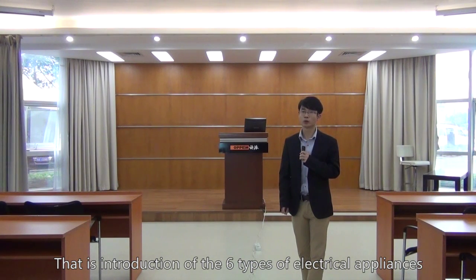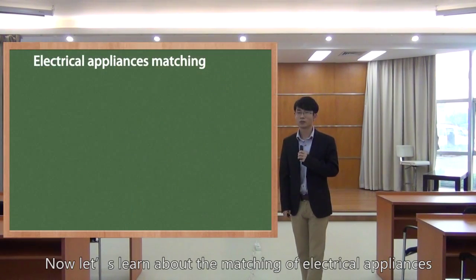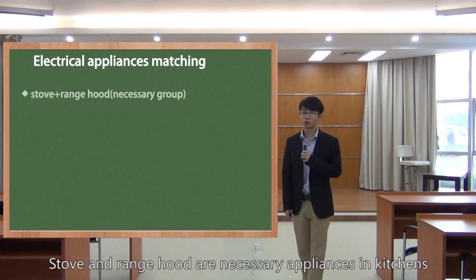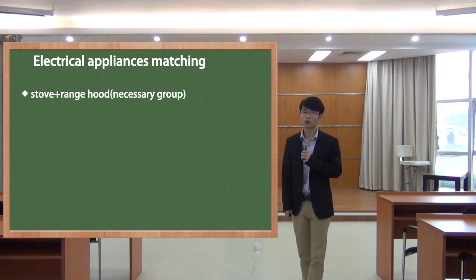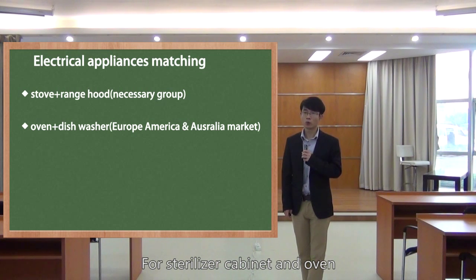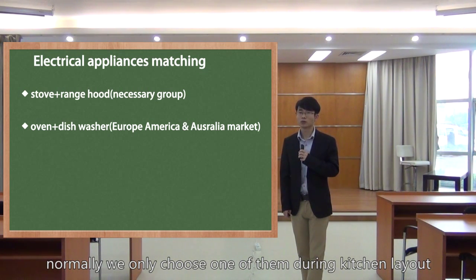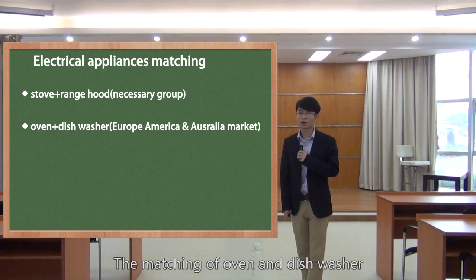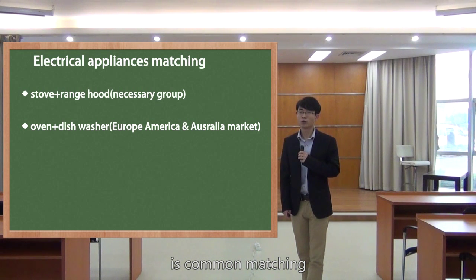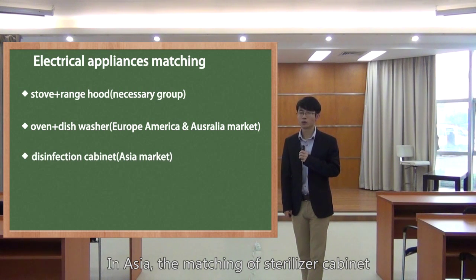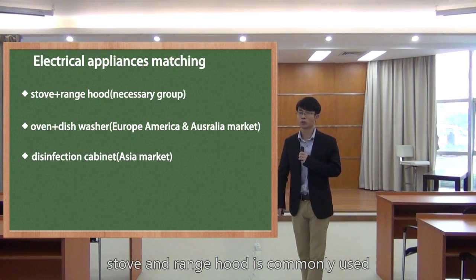That is the introduction of six types of electrical appliances. Next, let's learn about the matching of electrical appliances. Stove and range hood are necessary appliances in kitchens. For sterilizer cabinet and oven, normally we only choose one of them during kitchen layout. The matching of oven and dishwasher is common, especially in Europe, America and Australia. In Asia, the matching of sterilizer cabinet, stove and range hood is commonly used.